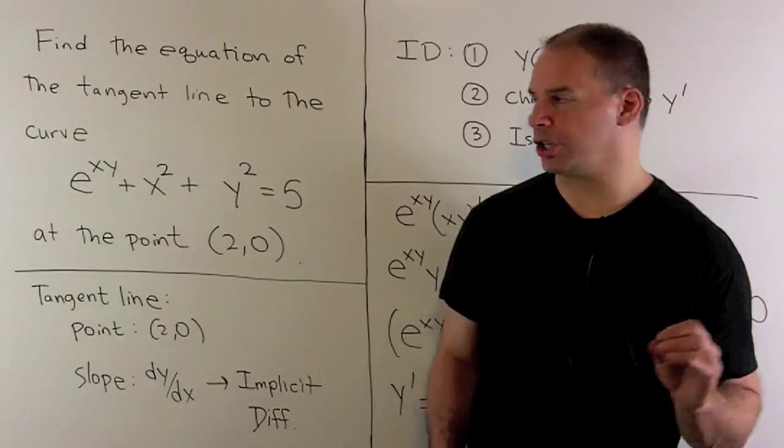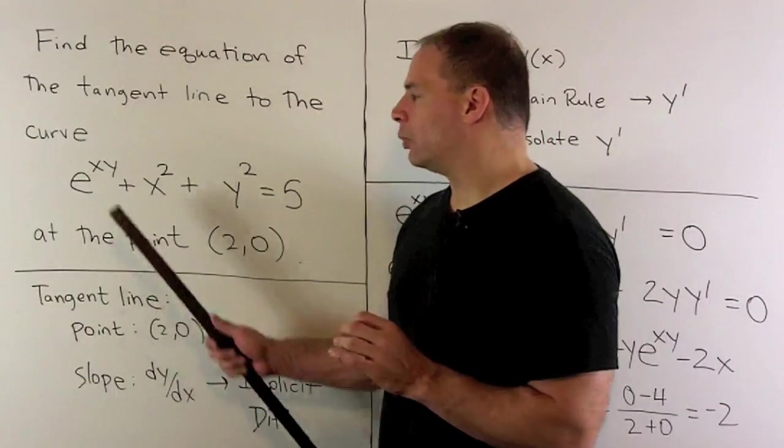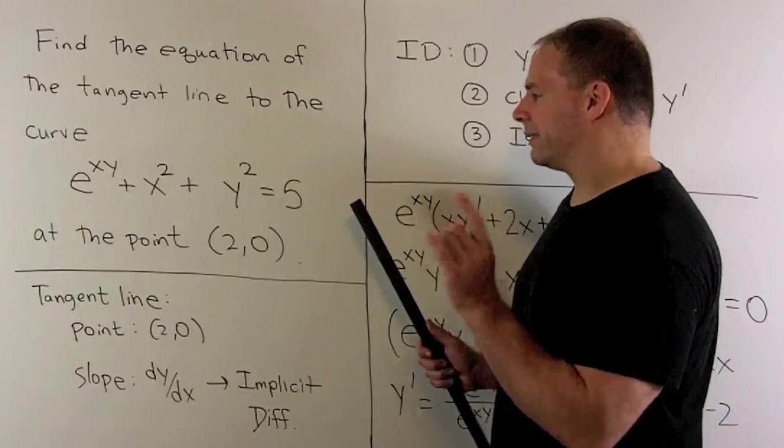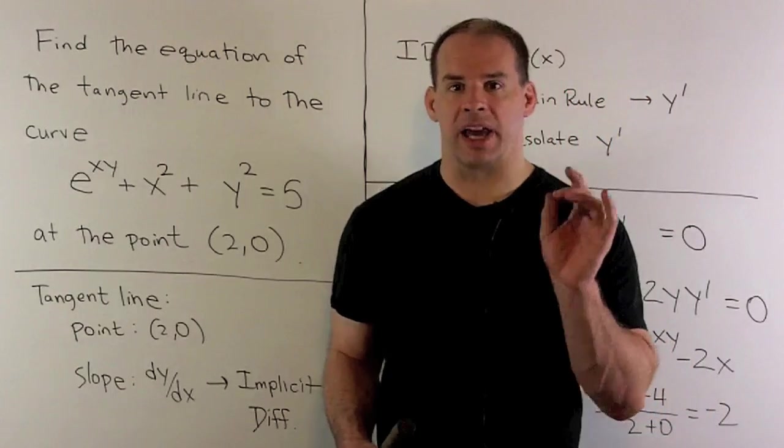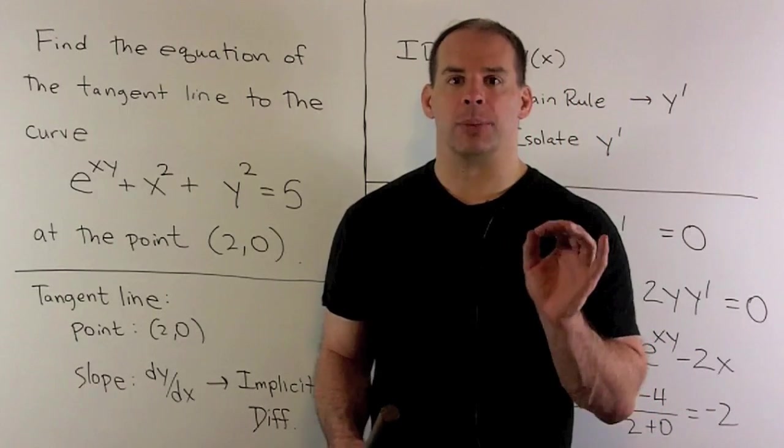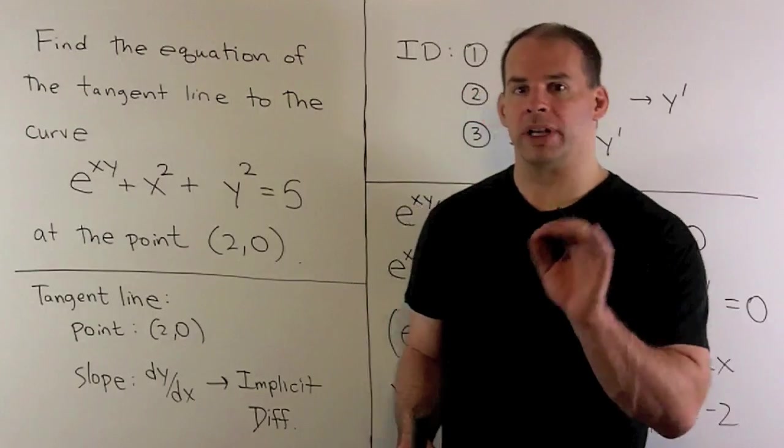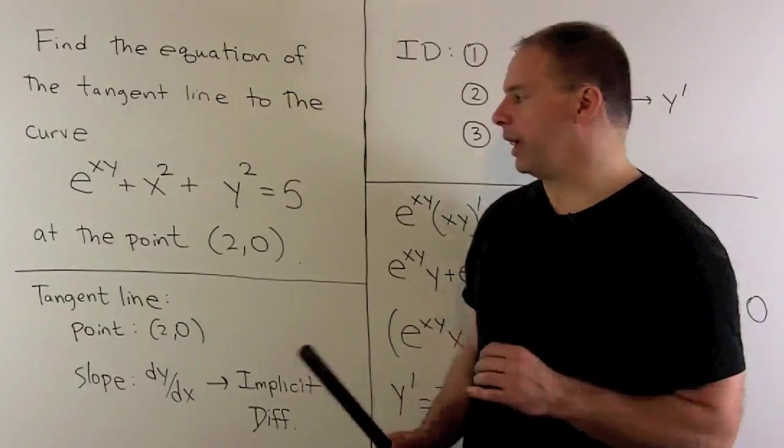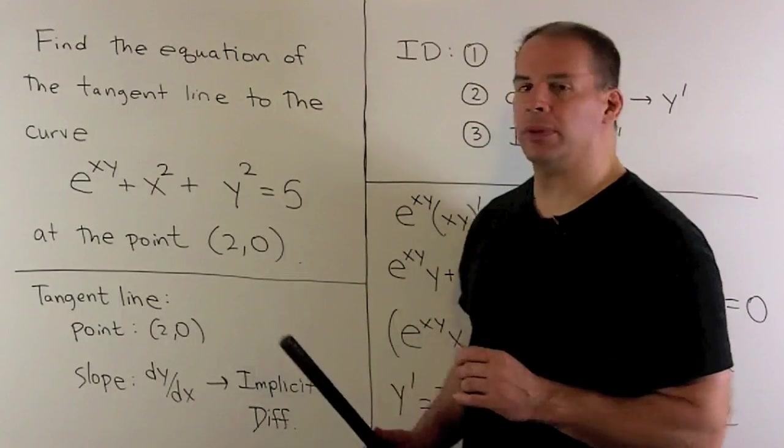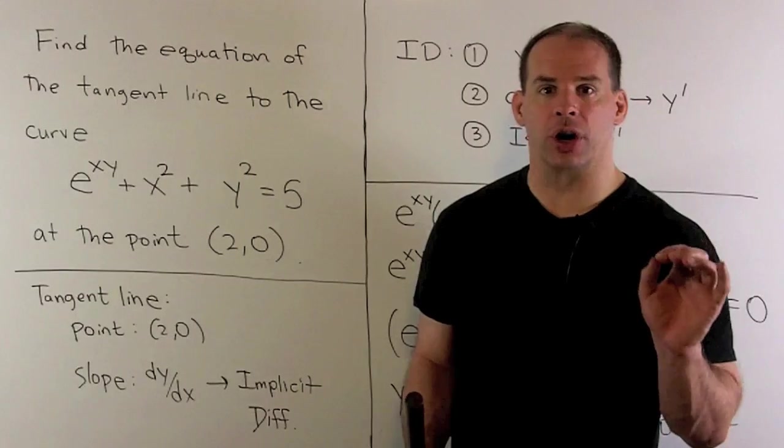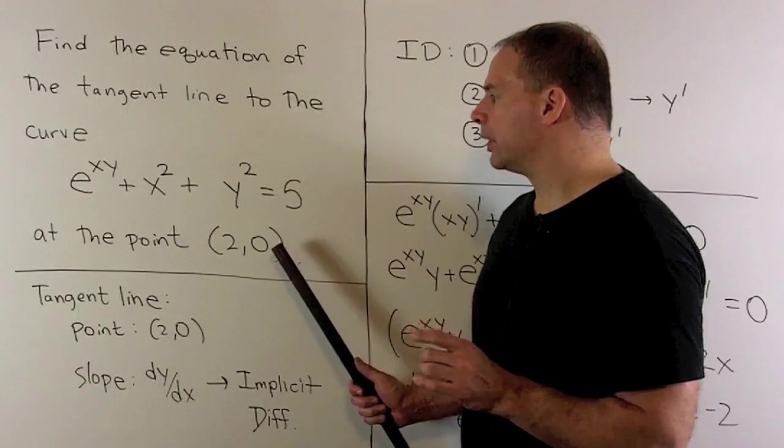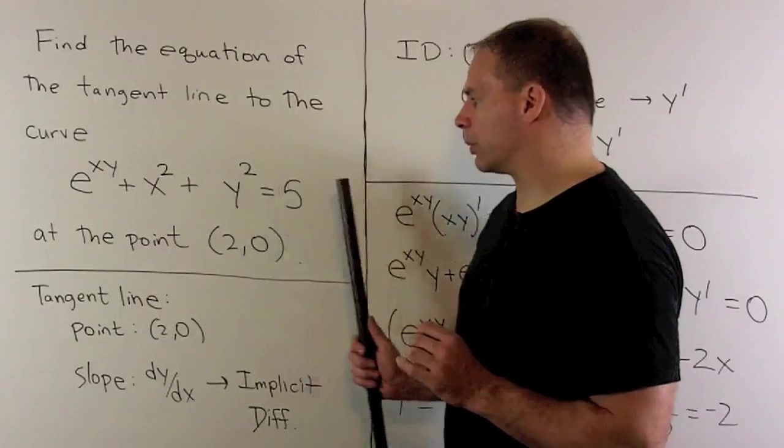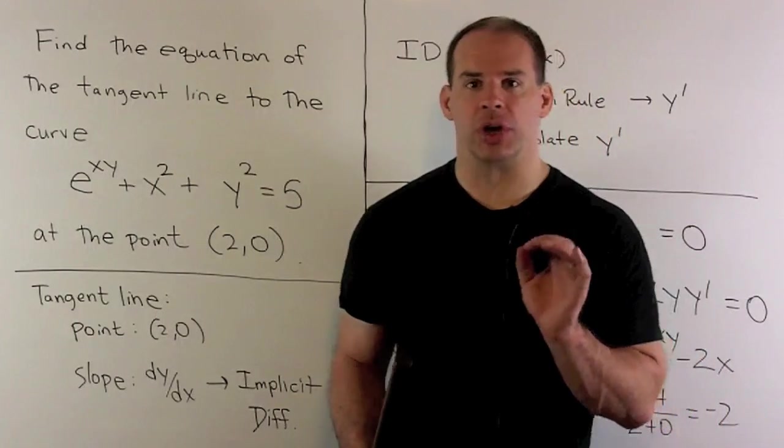Here, we don't have a function. Instead, we have an equation that defines our curve. We can still talk about tangent lines. We'll need a point and a slope. We're given the point (2,0). We should check that's on our curve. If I let x equal 2, y equal 0, we'll have 1 + 4 + 0 = 5. So our point's on our curve.